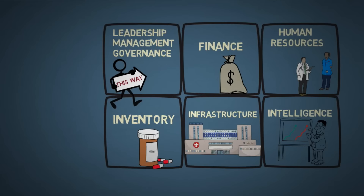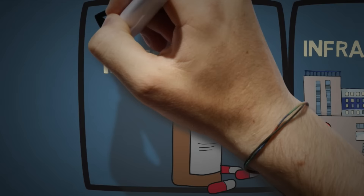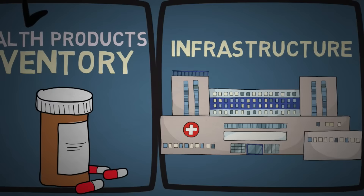The building blocks of a health system are: one, leadership, management and governance; two, health finance; three, human resources for health; four, health inventory; five, health infrastructure; and six, health intelligence.